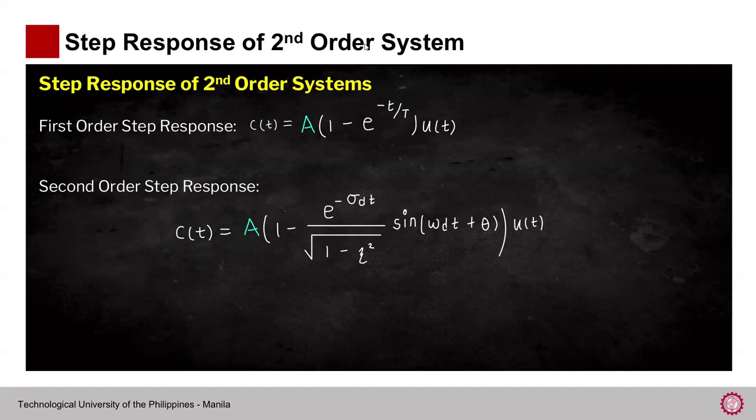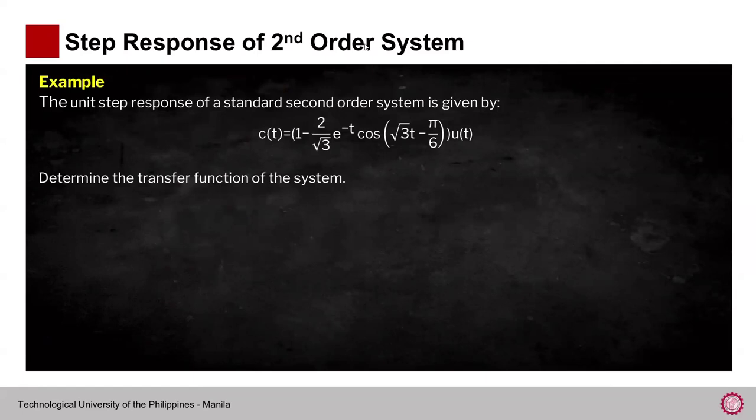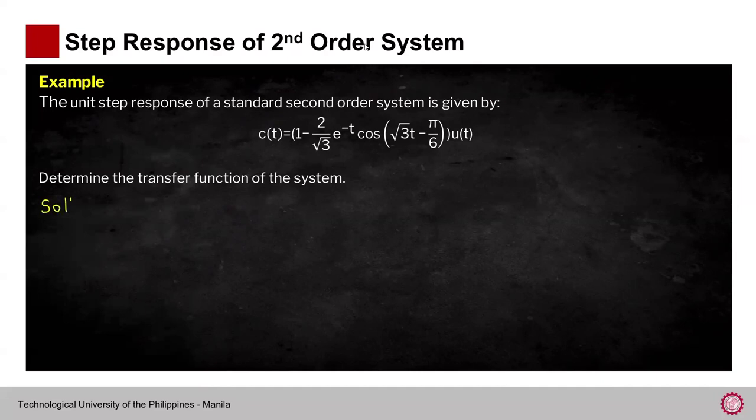Let's answer a previous exam problem. The unit step response of a standard second-order system is given as: c(t) = 1 − (2/√3)·e^(−t)·cos(√3·t − π/6). We need to determine the transfer function. Notice this is not in standard format because the standard format should have sine, not cosine. So we need to apply a trigonometric identity.